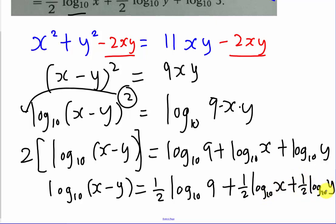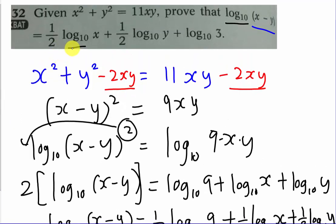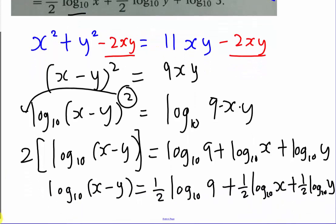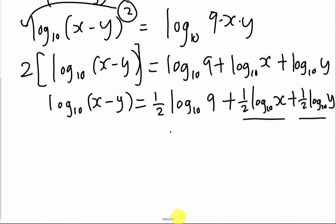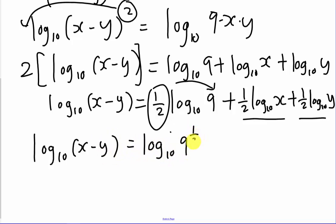I almost got the answer. According to here you should get half log base 10 of x, half log base 10 of y, and log base 10 of 3. The problem is I have both of these but I do not have the log base 10 of 3. So what I will do is I will move the half up to become the power of 9.